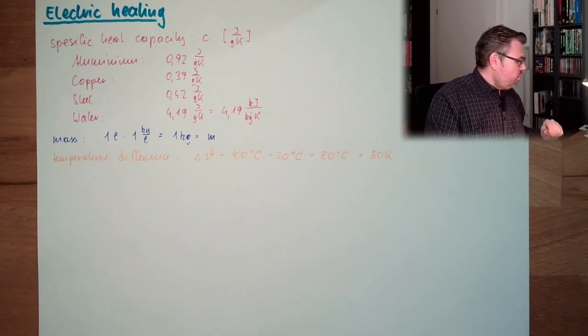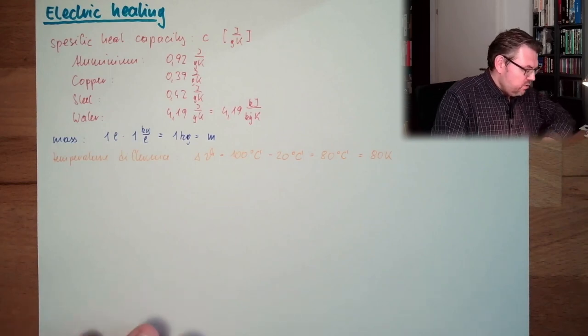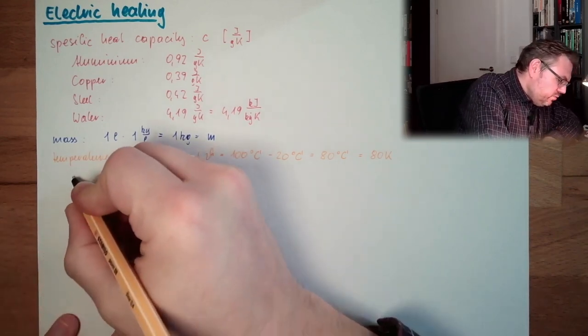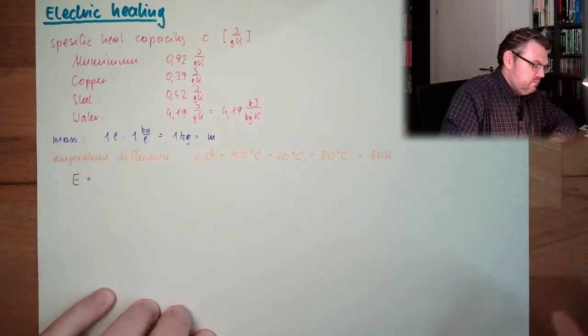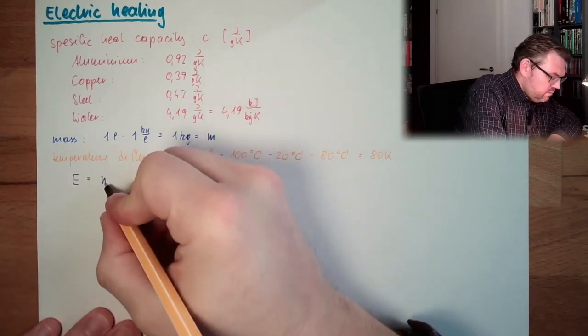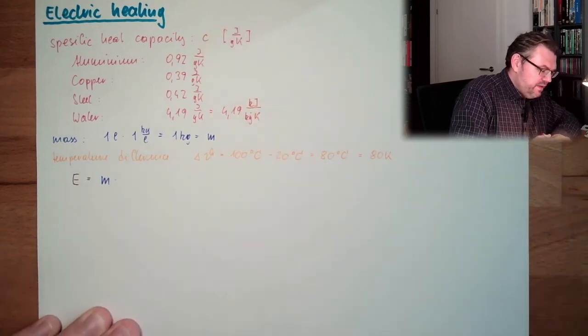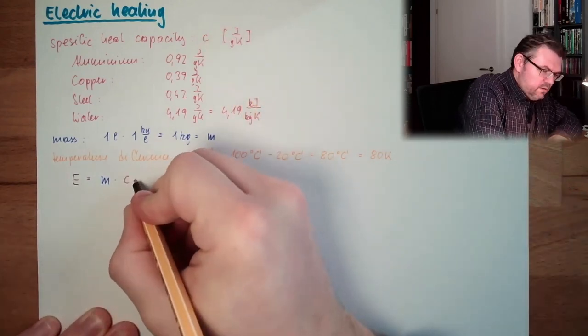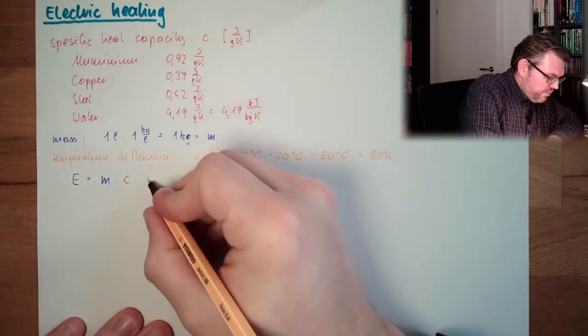And what is the energy I'm using? So, the energy I'm using to heat this up equals the mass multiplied by the specific heat capacity multiplied by this temperature change.